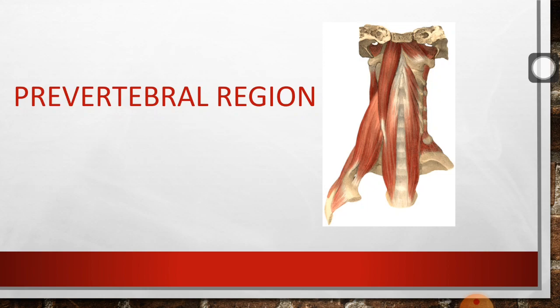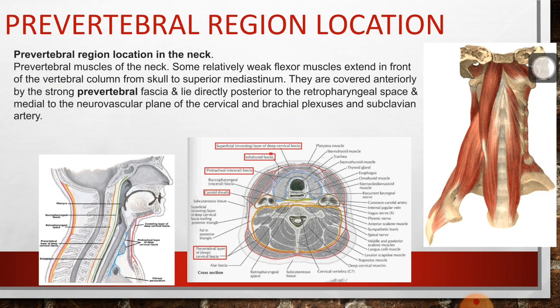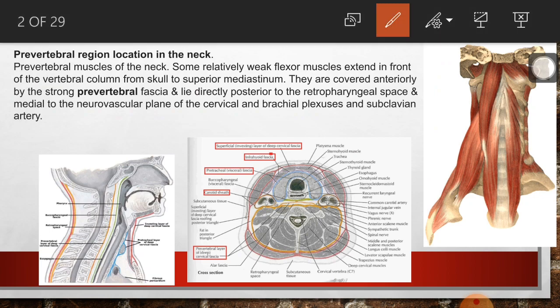The topic we are going to cover today is a very important one in the neck because it comes in the deeper dissection — your deeper structures of the neck. First of all, we are going to talk about the pre-vertebral region. The pre-vertebral region is located deep in the neck and contains the pre-vertebral muscles, which are relatively weak flexor muscles extending in front of the vertebral column from the skull to the superior mediastinum. They are covered anteriorly by the strong pre-vertebral fascia and lie directly posterior to the retropharyngeal space and medial to the neurovascular plane of the cervical and brachial plexus and subclavian artery.